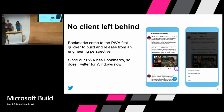An example of where regular updates is really impactful is when we're launching new features. We recently launched a feature called Bookmarks and it actually came to the PWA first. One of the reasons it came to the PWA first is because it was quicker and easier to build and release from an engineering perspective. With features like this coming to the PWA, now that Windows has the PWA, our Windows users also have access to these features. This ensures that no client is ever left behind when we're building new features.